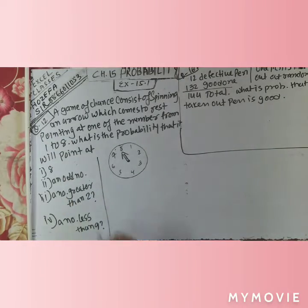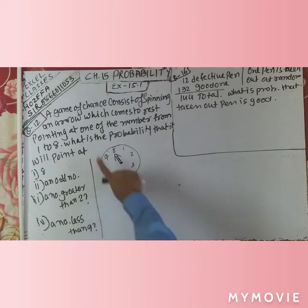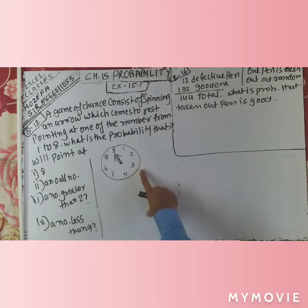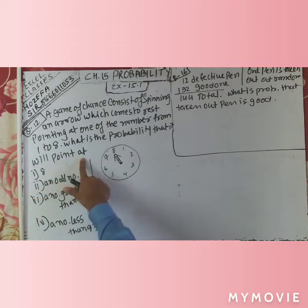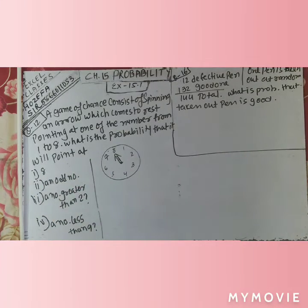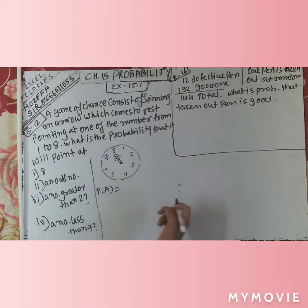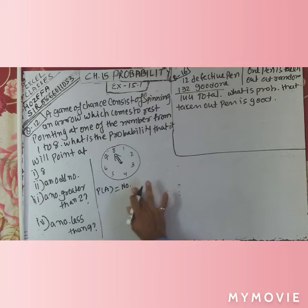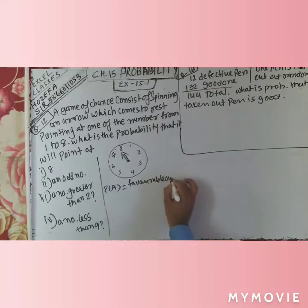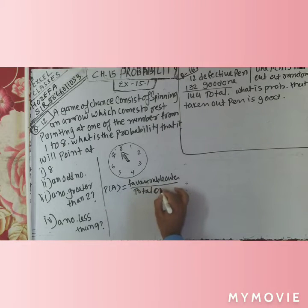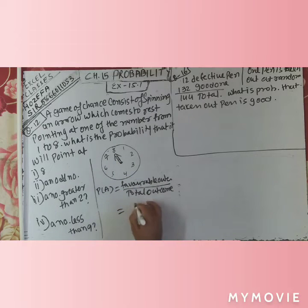Now question number 12: the game of chance consists of spinning an arrow on a circular board with numbers 1 to 8, and where it stops determines the prize. What is the probability that the arrow will point at 8? There is only one outcome of 8 on the board. So P(A) = 1 upon 8.